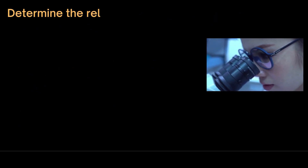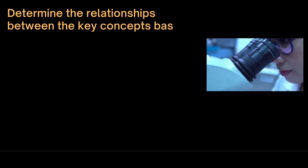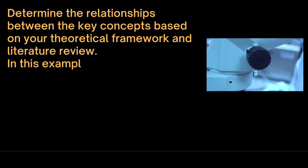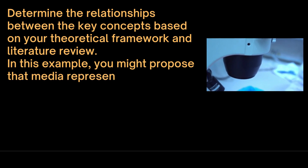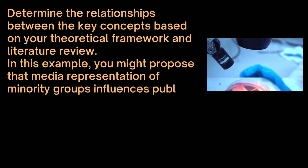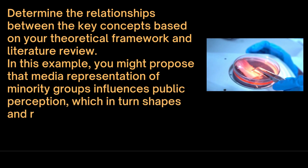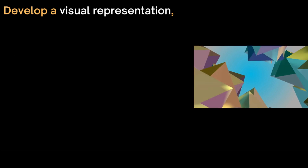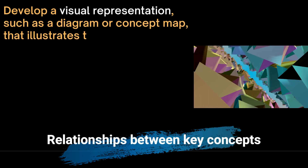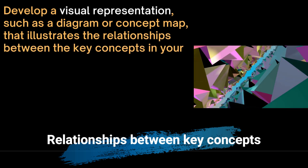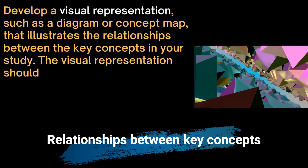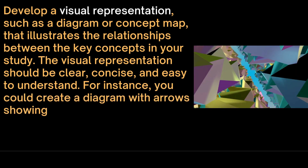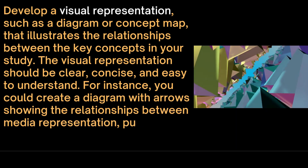We then determine the relationships between the key concepts based on our theoretical framework and literature review. In this example, we might propose that media representation of minority groups influences public perception, which in turn shapes and reinforces stereotypes. We also need to develop a visual representation — a diagram or concept map — that illustrates the relationships between the key concepts. The visual representation should be clear, concise, and easy to understand. For instance, a diagram with arrows could show the relationships between media representation, public perception, and stereotypes.